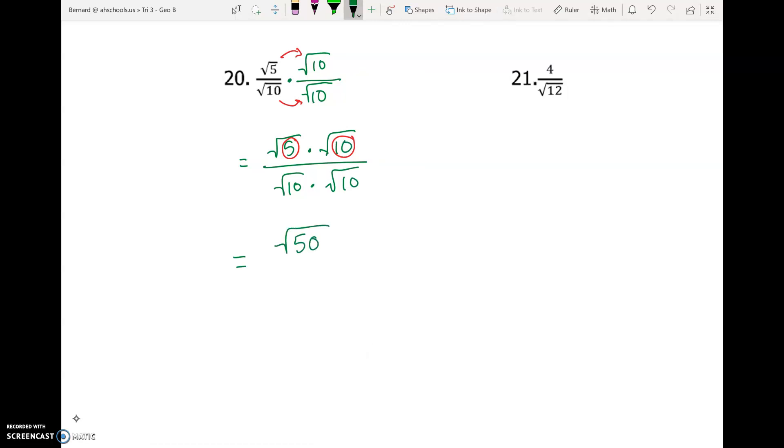Again, the reason is 5 times 10 is 50. But since they're both square roots, it stays under the square root. Same thing on the bottom. 10 times 10 is 100. So this should be the square root of 100.